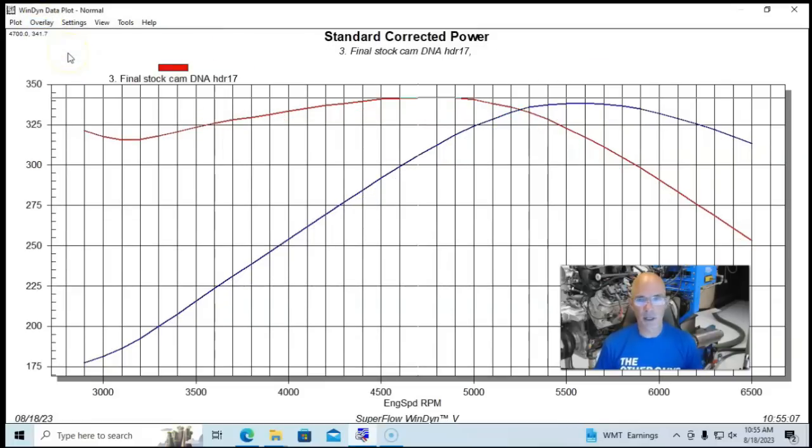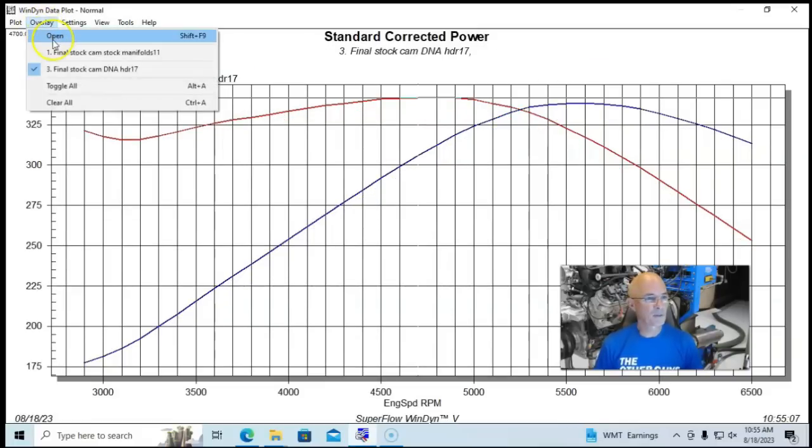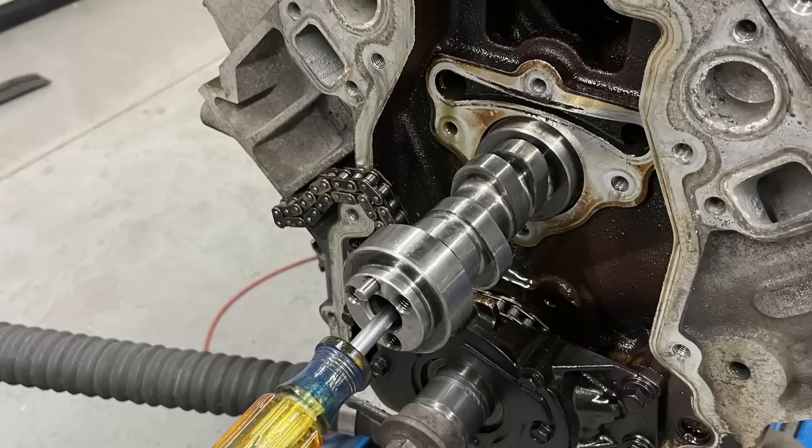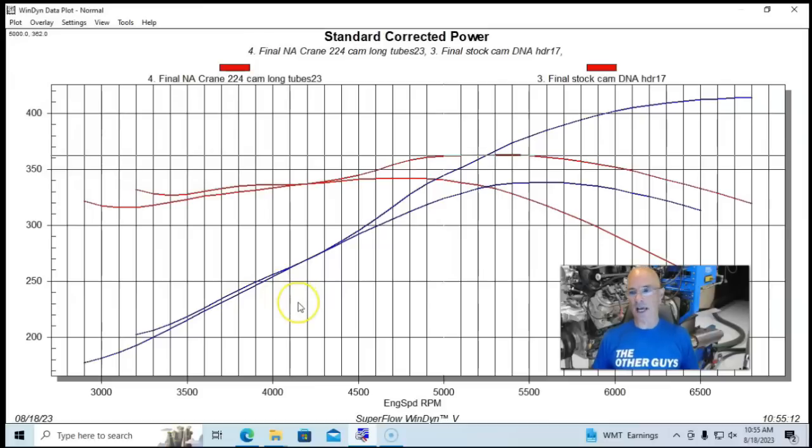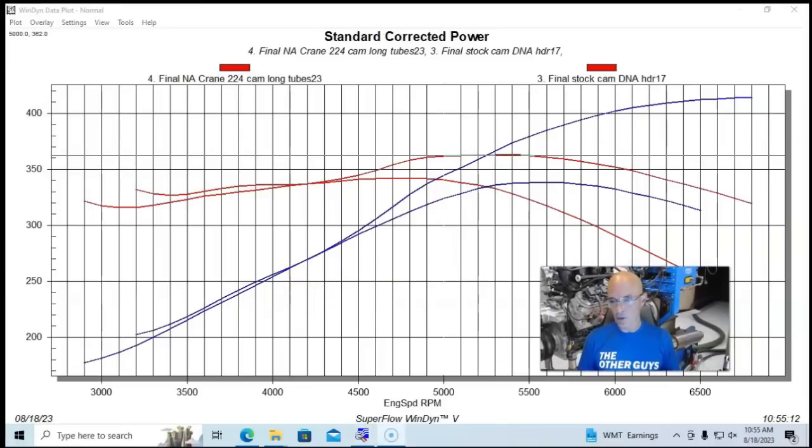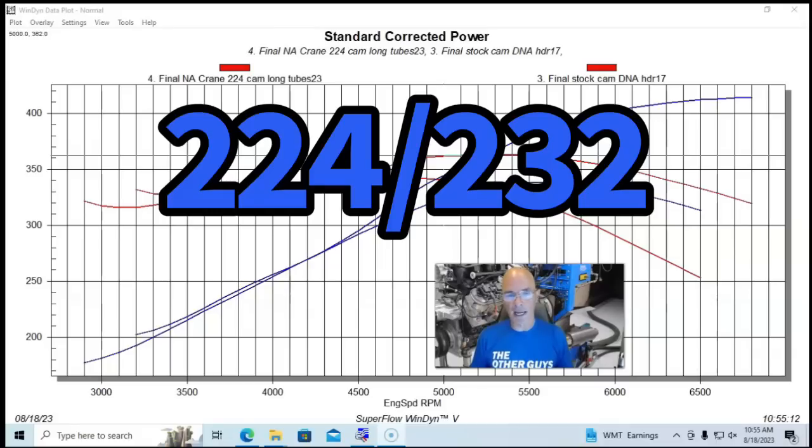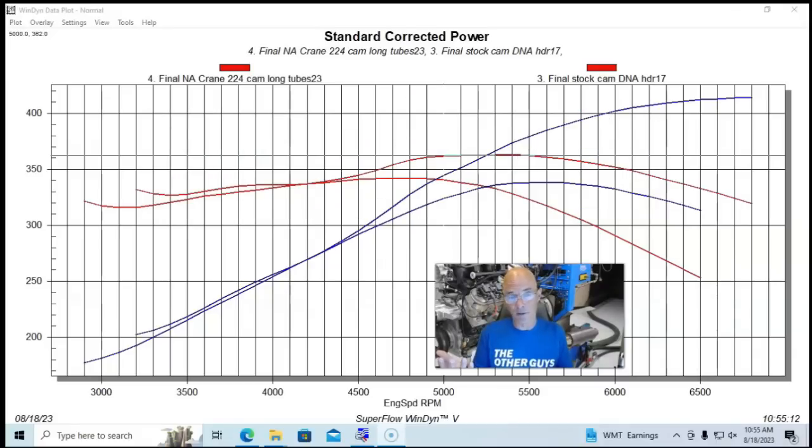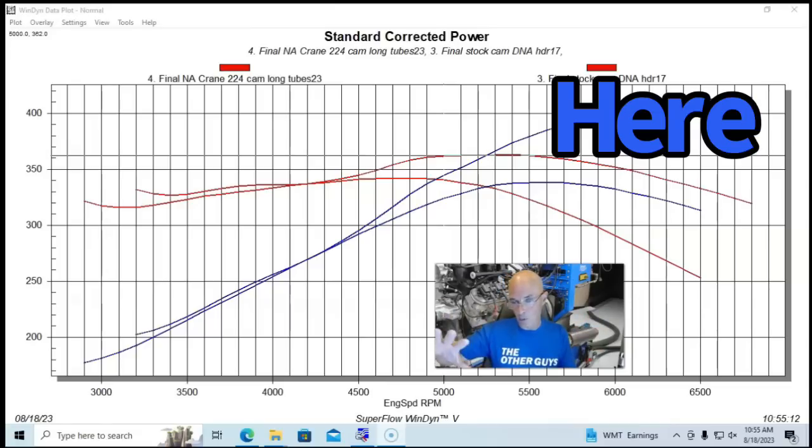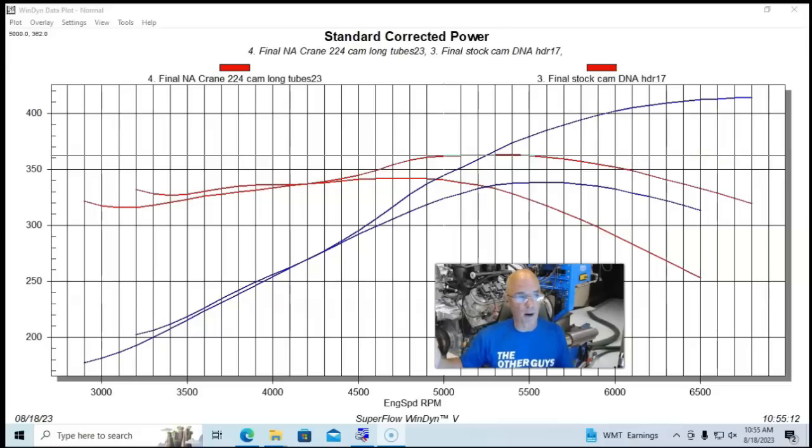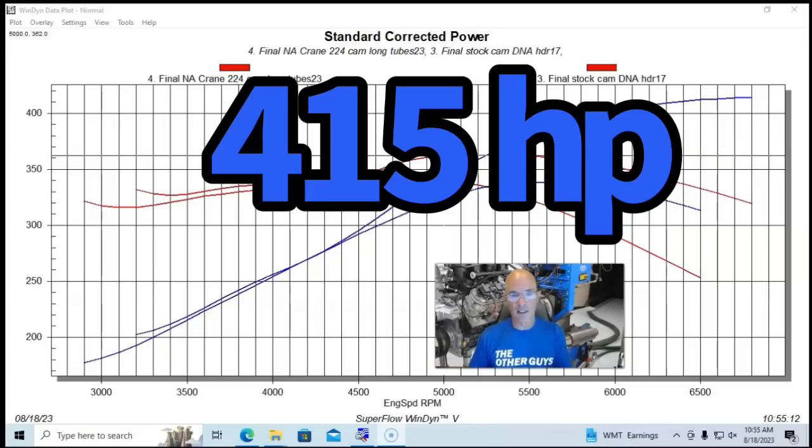It's also important to note that the header that you pick is going to determine how much power you get down low. A shorty header is not really going to do this. It needs to be a long tube header. And on a 4.8, I probably would pick a smaller primary diameter than I would on a modified 5.3 or 6.0. Okay, the header didn't really work out too good. What happens if we add a camshaft? And this camshaft is fairly good size, but it gives us an idea of what's happening. We've got big power gains. This was a 224 cam, probably much bigger than I would pick for a 4.8.